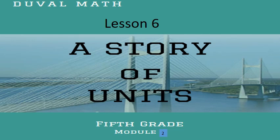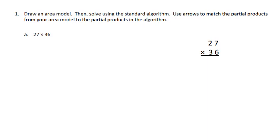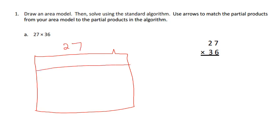Okay, this is Module 2 Lesson 6. We're continuing doing multiplication of multi-digit numbers using partial products. On our first example we have 27 times 36. We're going to start off with our area model and I'm going to put 27 across the top and I'm going to split it up to 20 and 7.